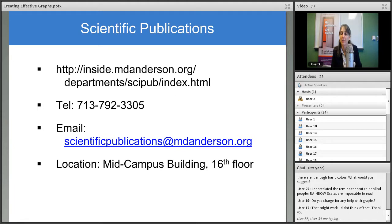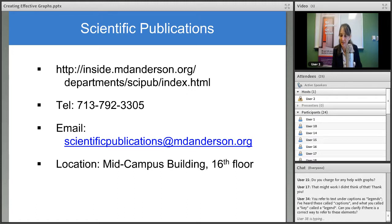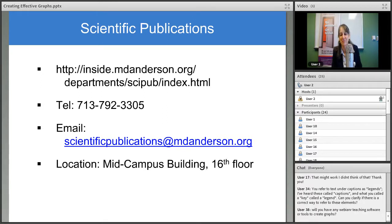I see a couple other people are typing. You refer to text under captions as legends. I've heard these called captions and what you called a key called a legend. Can you clarify if there's a correct way to refer to these elements? Caption or legend are equally acceptable for the text that appears under a figure. And I know that the Microsoft Office applications call what I called a key, they call a legend. So I think you're correctly noticing that some of these terms are interchangeable.